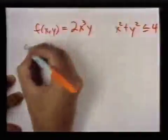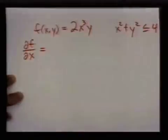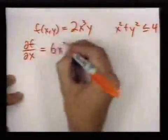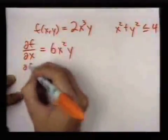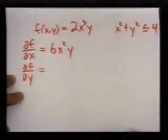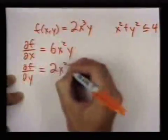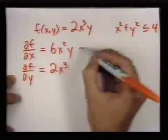So the partial with respect to x is 6x²y and the partial with respect to y is 2x³, and critical points are where both of these are 0.